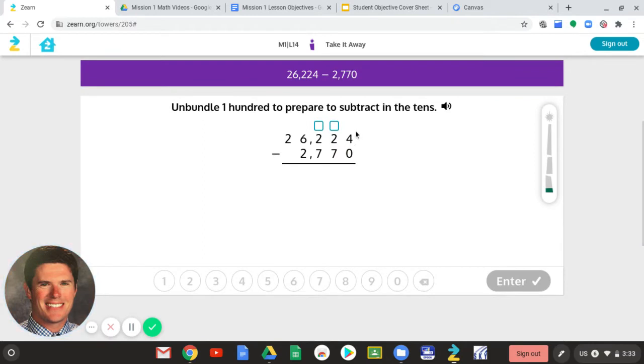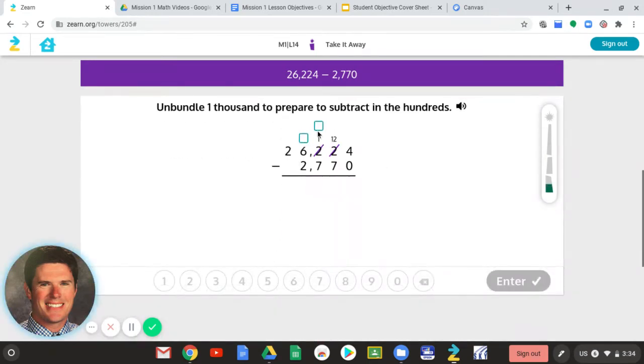Now it says unbundle 100 to prepare to subtract in the tens. So what this is doing is I can't do 2 minus 7. It wants me to borrow. So what do I do? I have to go up to this next place value and I have to borrow 1 from that 2. So the 2 becomes a 1 and that 2 becomes a, remember I add 10 to it, a 12. Now I still can't do 1 minus 7 here. So I have to unbundle or borrow from the next place value, which is the thousands.